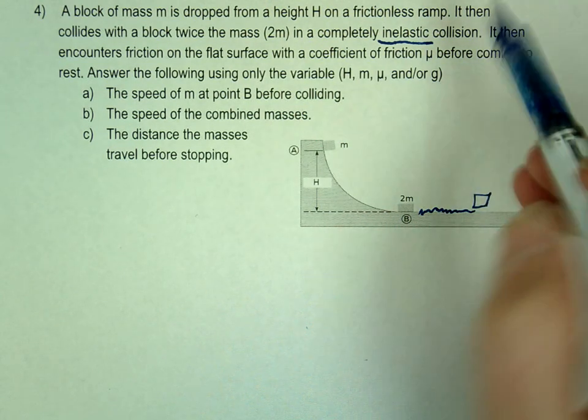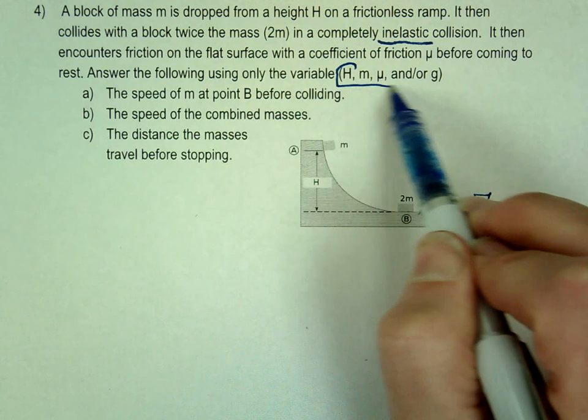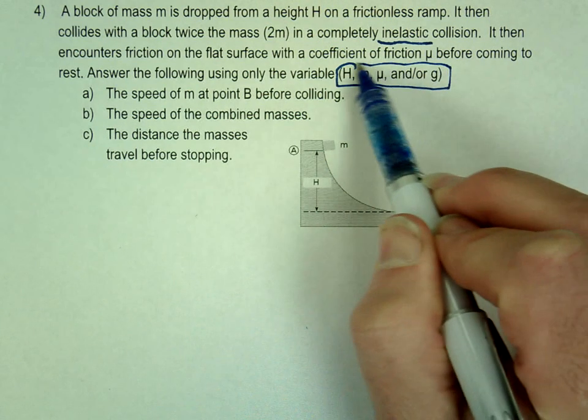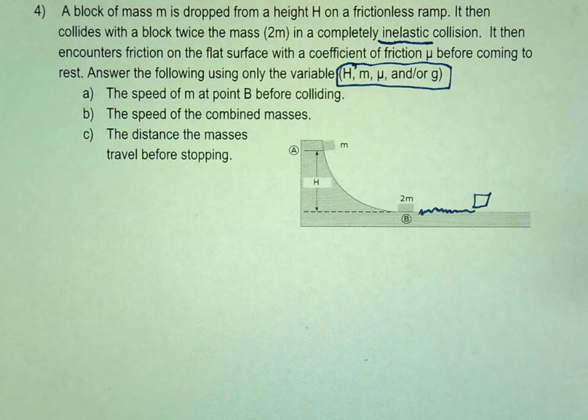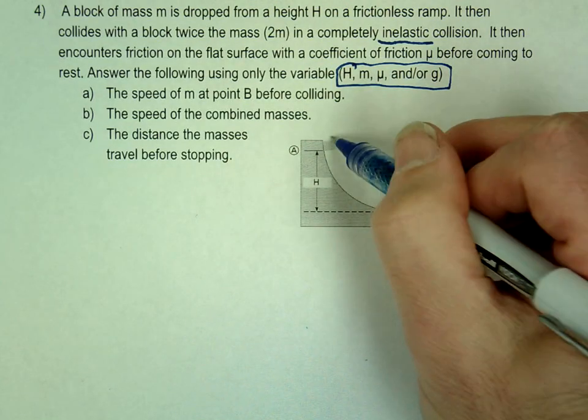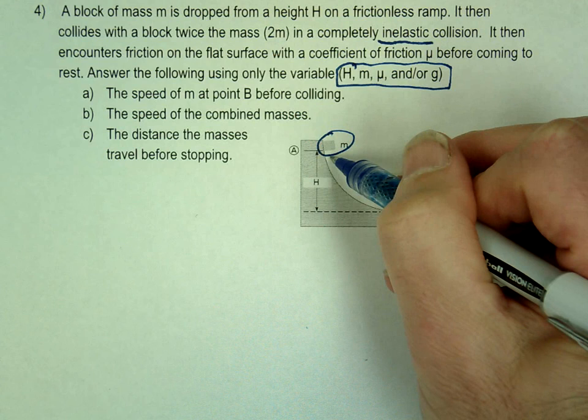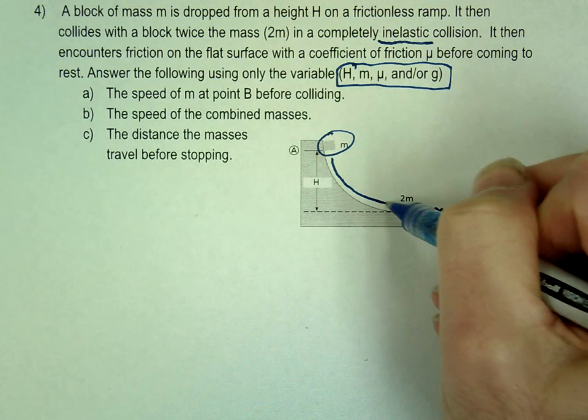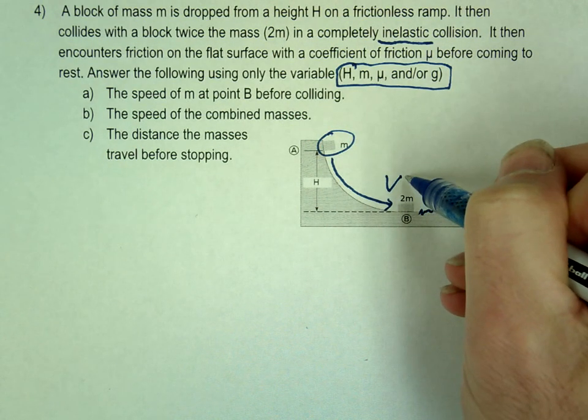We are going to answer this with variables. Remember, variable-only problems always look back to what they give you. Make sure your answer only has those variables. So the first case, we're going to start up here. And we're asking how fast is it moving when it reaches the bottom. So what's that velocity?